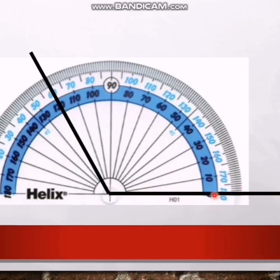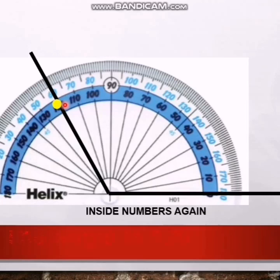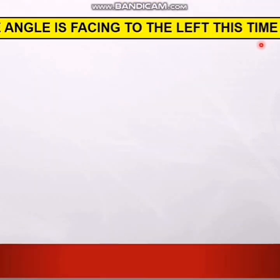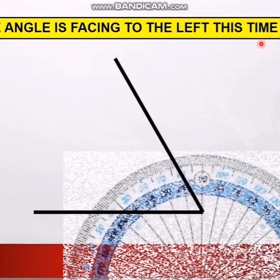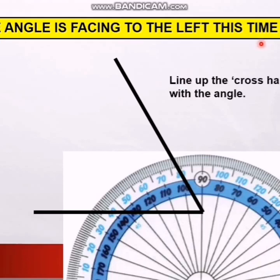Now I take another angle. I place the protractor exactly. Again my baseline starts from the inner side, and when I count the inside numbers the other line goes to 120. So this is a 120-degree angle.